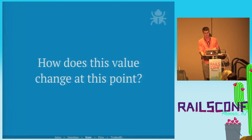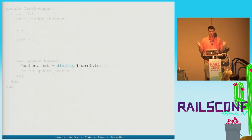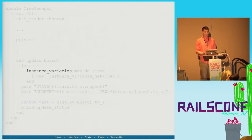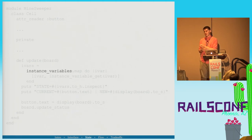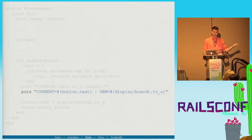How does this value change at this point? In our code, button.text is changing to something we don't like. We can figure out exactly what's happening quickly by adding introspection code. We use the instance_variables method — it gives an array of symbols listing every instance variable initialized on this object. We map over that, use instance_variable_get to get each value, create a hash, and put it out to the command line along with the current and new state of the text.